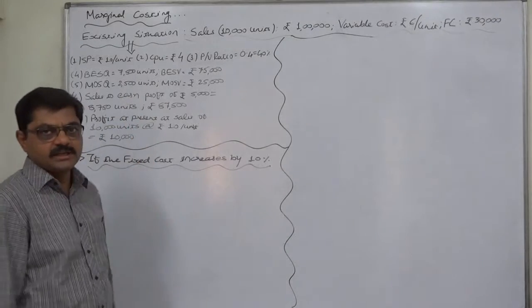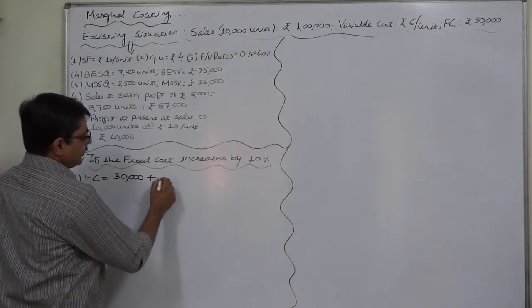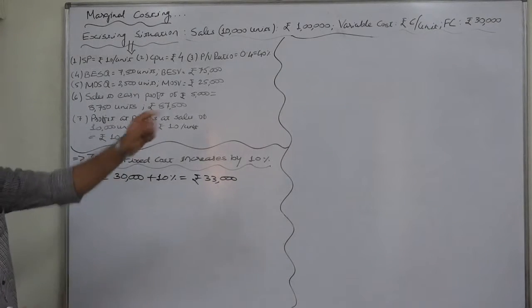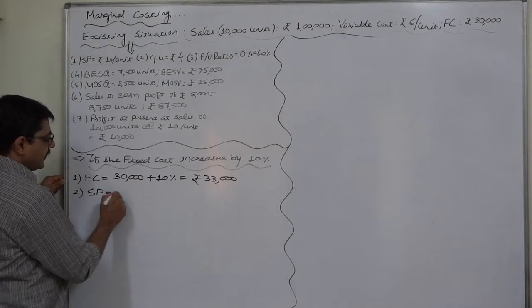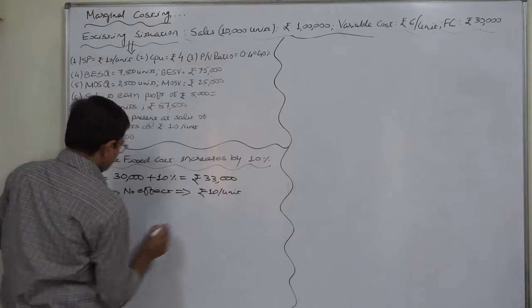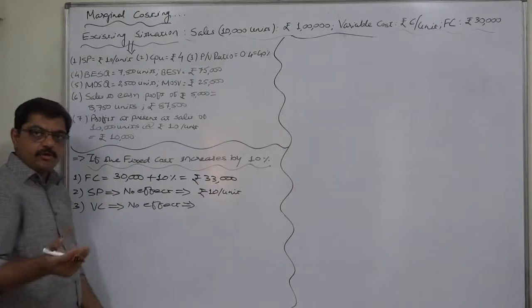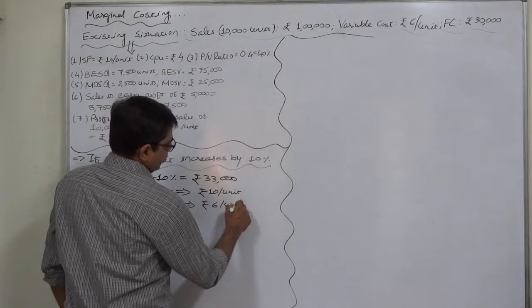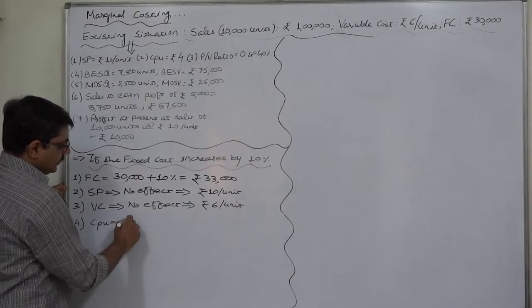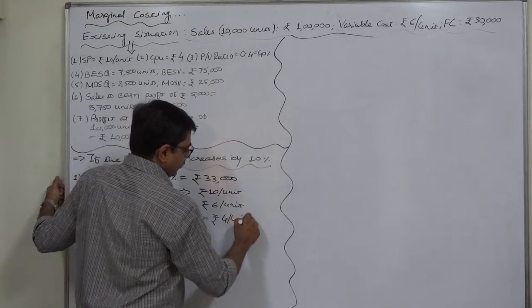Now with this, if it happens that somehow fixed cost increases by 10%, what will happen? First of all, the fixed cost will be now 30,000 existing increase means plus 10%, means 3,000, so it will be now 33,000 rupees against the existing amount of rupees 30,000. Next, on selling price there will be no effect, no change in selling price, so it will be rupees 10 per unit. Similarly, no change in variable cost, no effect of changing fixed cost because both have their own entity, rupees 6 per unit. And as the effect of no change in selling price as well as variable cost, there will be no change in contribution per unit. It will remain 10 minus 6, rupees 4 per unit, unchanged.